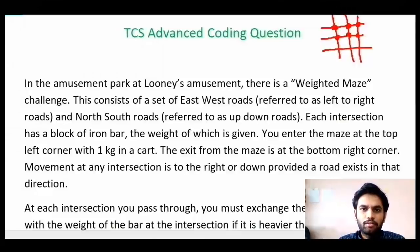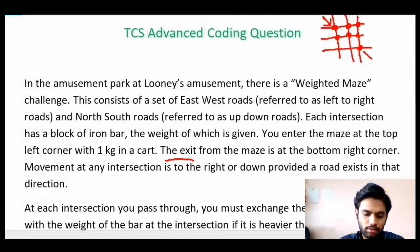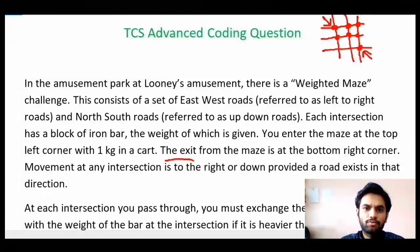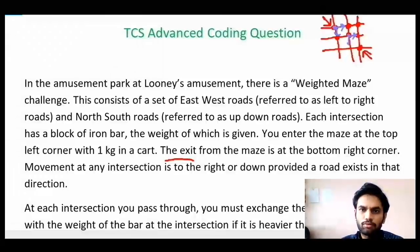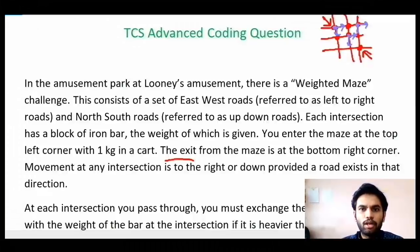You enter the maze at the top left corner with 1 kg in a cart, and the exit from the maze is at the bottom right corner. Movement at any intersection is to the right or down, provided a road exists in that direction. From any point we can move right or down, but from the last point in a row we cannot move right because there is no road present, so we can only move down.